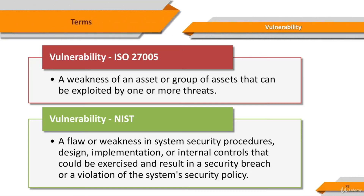Let's think about the term vulnerability. I want to show you two vulnerability definitions from two important documents. The first document, ISO 27005, is the prime 27000 series standard covering information security risk management. It provides guidelines for information security risk management in an organization, specifically supporting the requirements of an information security management system defined by ISO 27001.